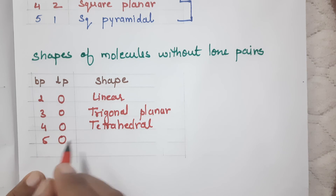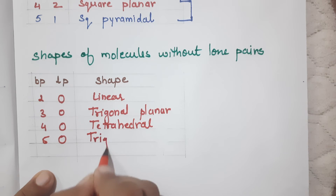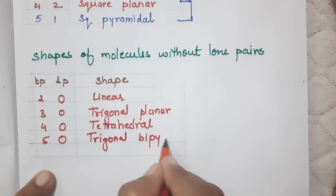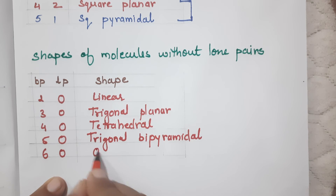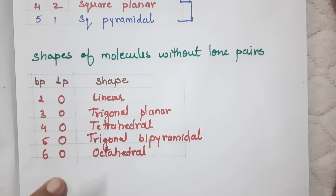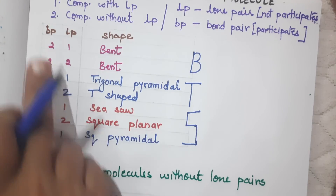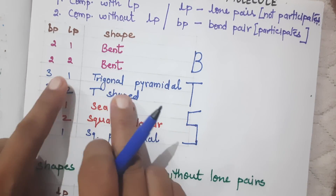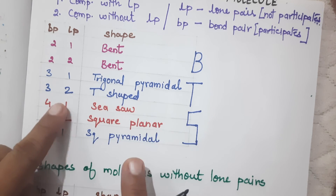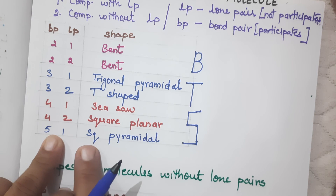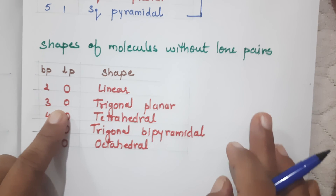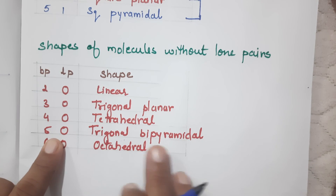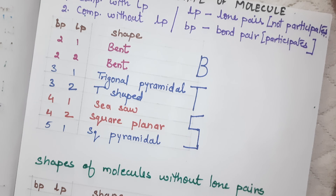Five bond pairs and zero lone pairs gives a trigonal bipyramidal shape. Six bond pairs and zero lone pairs gives an octahedral shape. So to summarize: without lone pairs — 20 linear, 30 trigonal planar, 40 tetrahedral, 50 trigonal bipyramidal, and 60 octahedral. With lone pairs — 21 and 22 bent, 31 trigonal pyramidal, 32 T-shaped, 41 seesaw, 42 square planar, 51 square pyramidal.